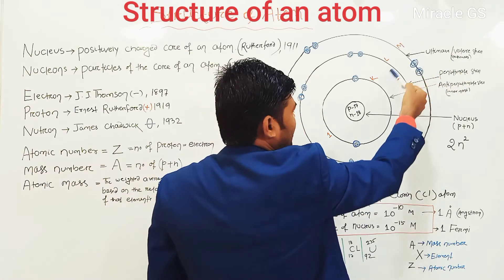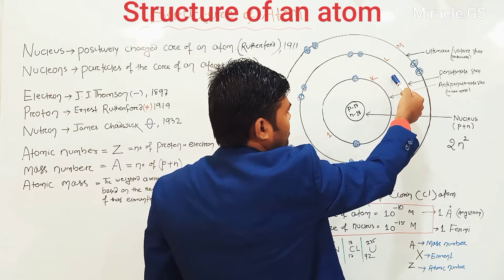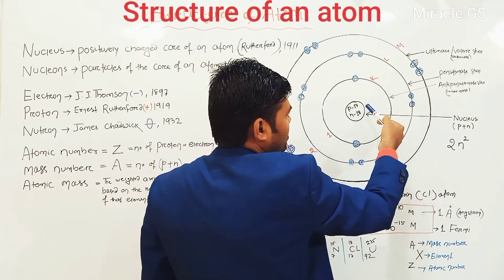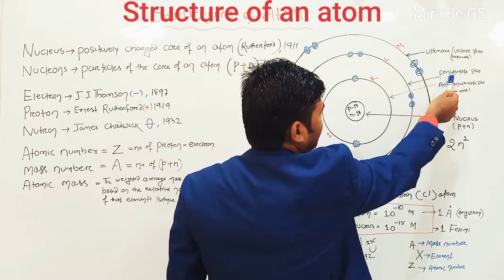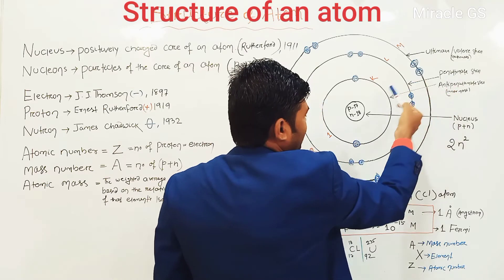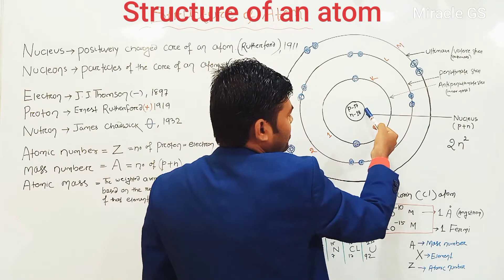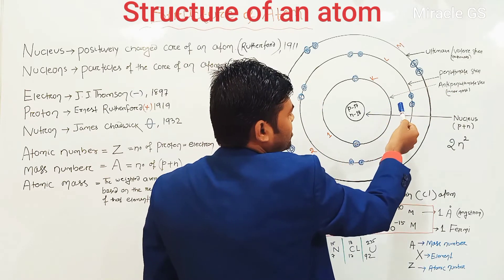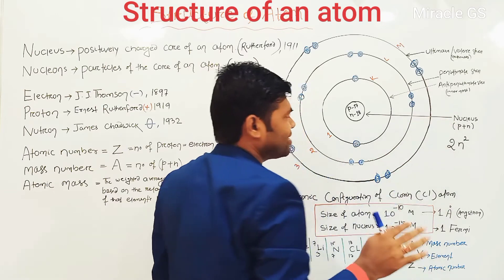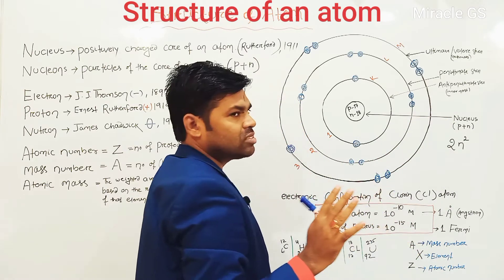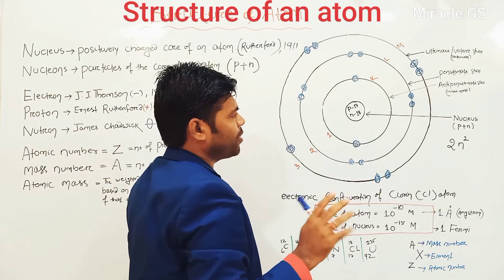The last shell is called the ultimate cell, or valency cell, or outermost cell. Then next to the ultimate cell towards the nucleus is called as penultimate cell. And the last cell near the nucleus is called as anti-penultimate cell. These questions are very important for your exam point of view.